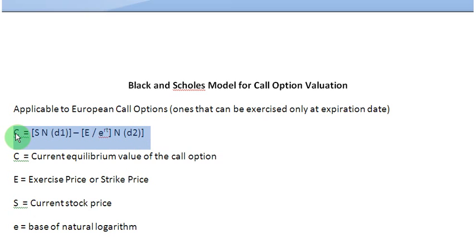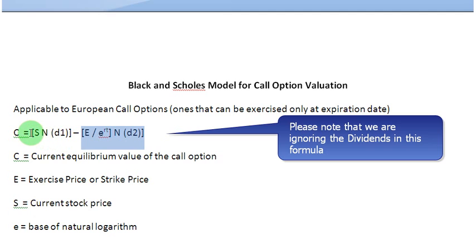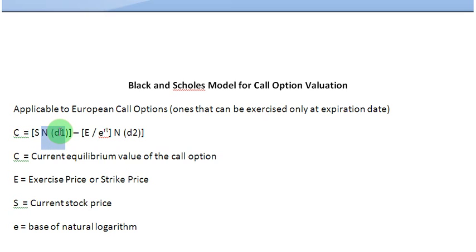On the left-hand side of this equation, you see the letter C, which stands for the current value of the call option. On the right-hand side, you see two terms inside square brackets. We are taking a difference between these two terms. Inside the first square bracket, you have a product between two numbers: the first number is S, which is the current stock price, and the second number is N of D1, about which we are going to talk shortly.